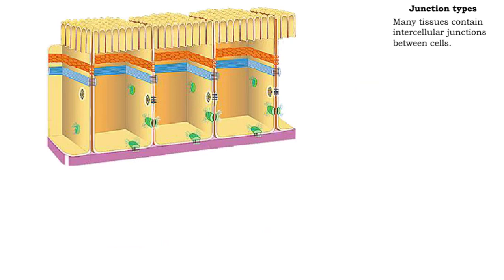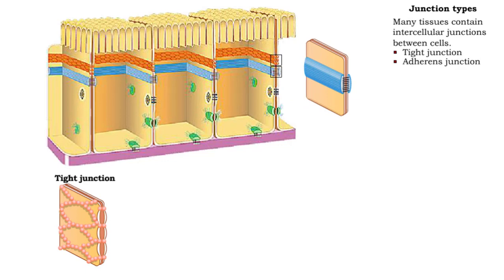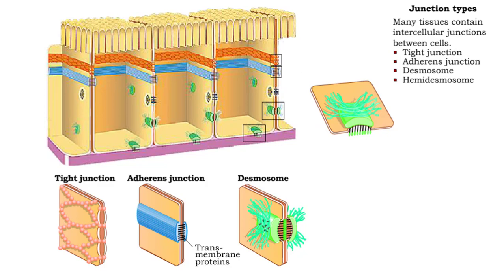There are five types of intercellular junctions: tight junctions, adherence junctions, desmosomes, hemidesmosomes, and gap junctions.